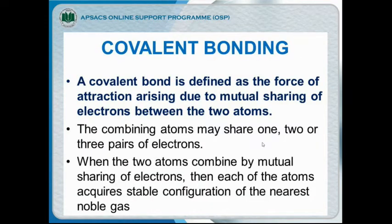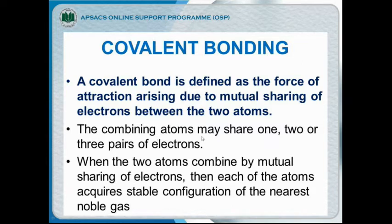What is covalent bonding? A covalent bond is defined as a force of attraction arising due to the mutual sharing of electrons between two atoms. Mutual sharing means equal sharing — if one atom provides one electron, another atom must also provide one electron. The combining atoms may share one, two, or three pairs of electrons.